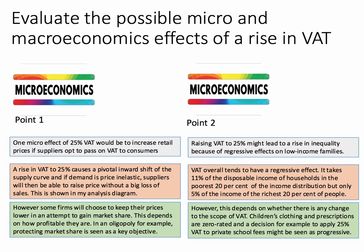A second micro point is that lifting VAT to 25% from 20% could cause an increase in inequality because of the possible regressive effects on low-income families. VAT overall tends to have a regressive effect. It takes about 11% of the disposable income of households in the poorest 20% of the income distribution, but only about 5% of the income of the richest 20% of people. So the argument is that raising VAT would increase income inequality — a micro aspect.